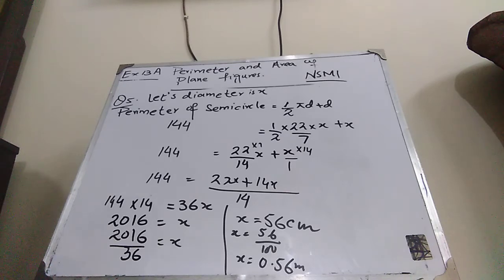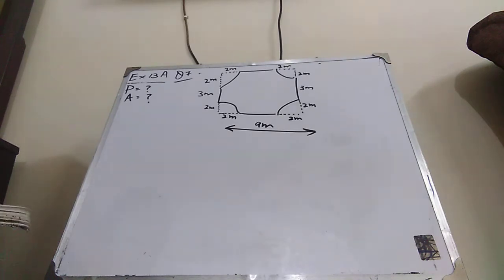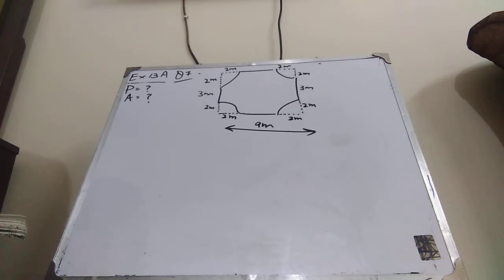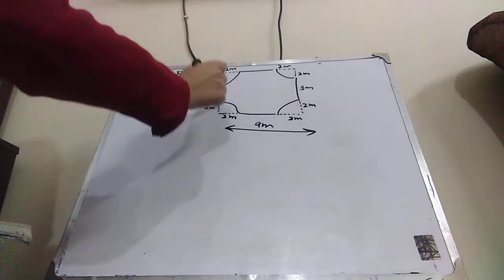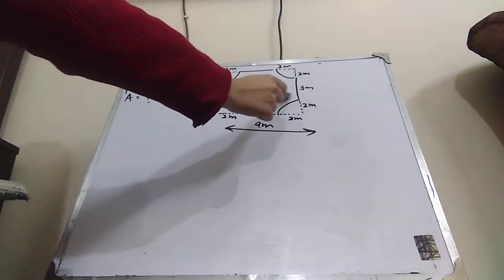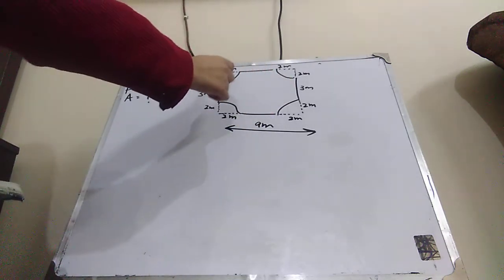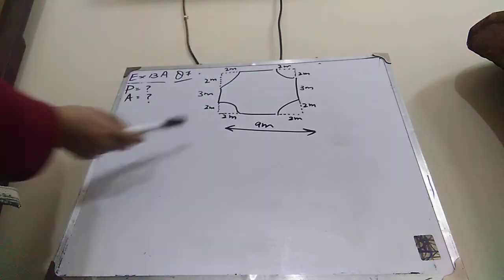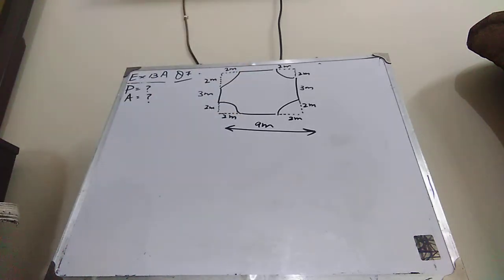Let's come to question number 7. I will make a separate video for question number 6, but right now I am going to explain question number 7. Question number 7 is: in the figure, 4 quadrants each of radius 2 metres are removed from a rectangle. Find the perimeter and the area of the figure. Basically, we have to remove these quadrants from this shape and find the area of what is left after these dotted lines — we have to remove these dotted lines from the shape.